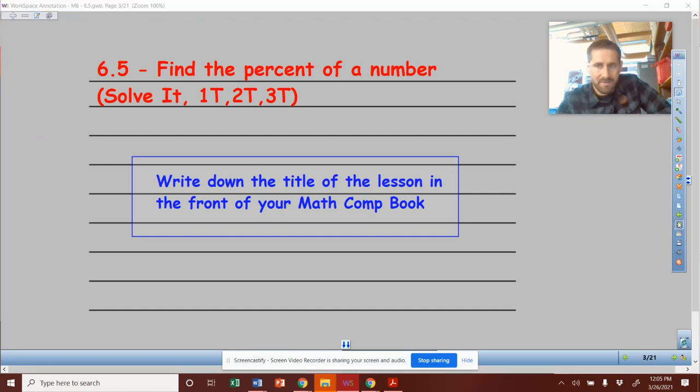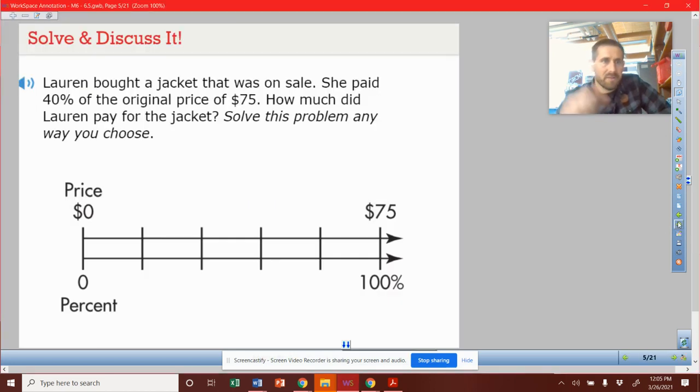Write down your title and let's start writing notes as we go. Lauren bought a jacket that was on sale. She paid 40% of the original price of $75. How much did Lauren pay for the jacket? You can see someone chose to draw this grid, which will help us a lot in this problem. But in most problems, you're not going to draw one of these out.